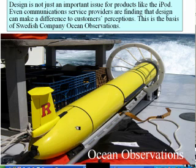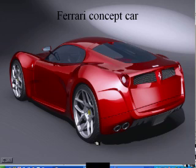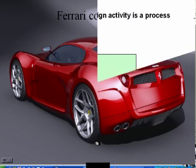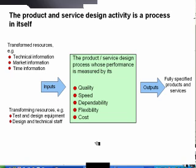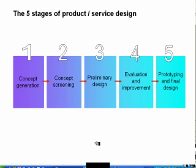It's not just iPads that have good design — here's a design for an observation submarine. Look at the Ferrari concept car: not a car put into general production, but one used to explore design ideas. You transform resources to get to the product or service design process, whose performance is measured by quality, speed, dependability, flexibility, and cost. There are five stages of design: concept generation, concept screening, preliminary design, evaluation and improvement, and prototyping.